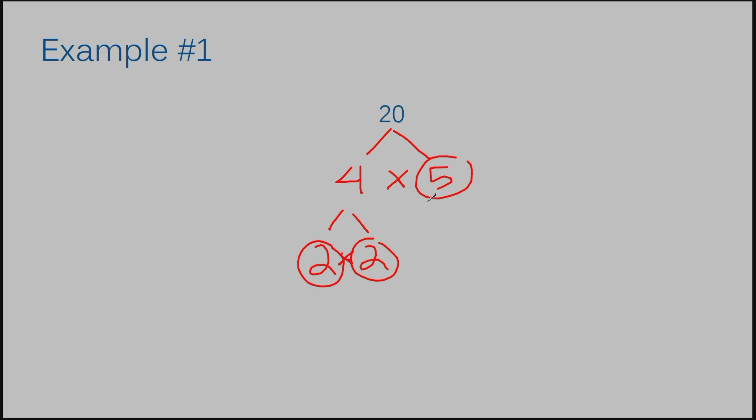So the prime factors of 20 would look something like this: 2 times 2 times 5. So if I were to multiply these three numbers together, I would get 20. 2 times 2 is 4. 4 times 5 is 20.